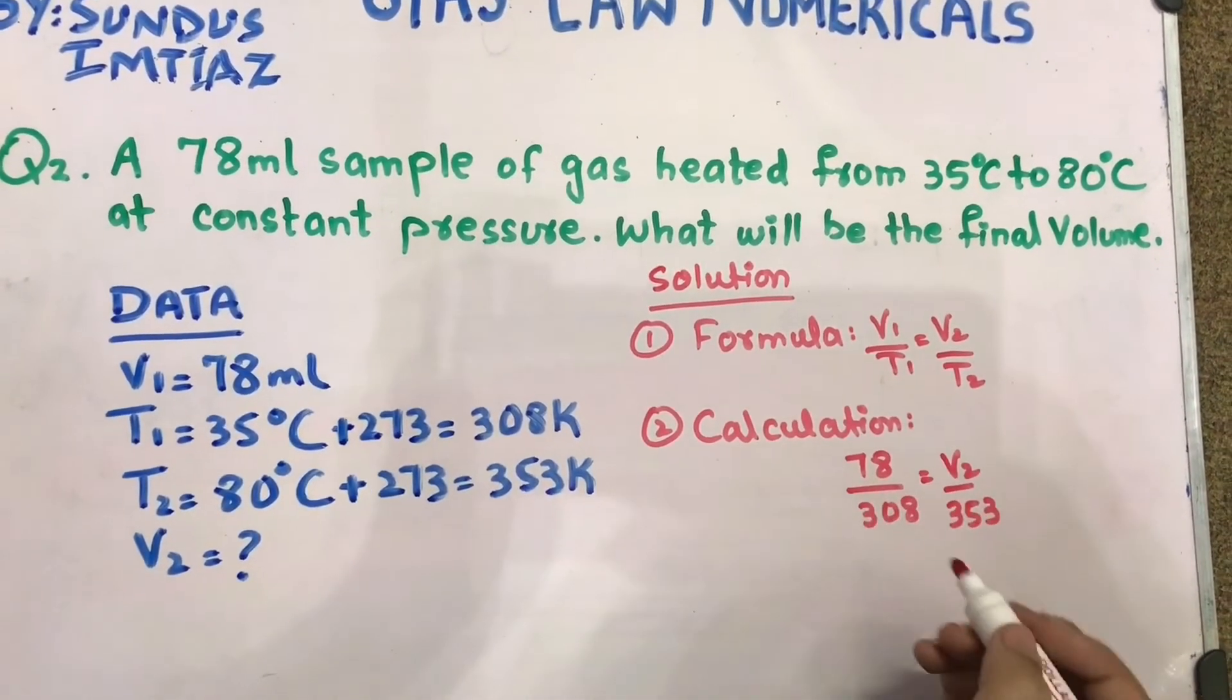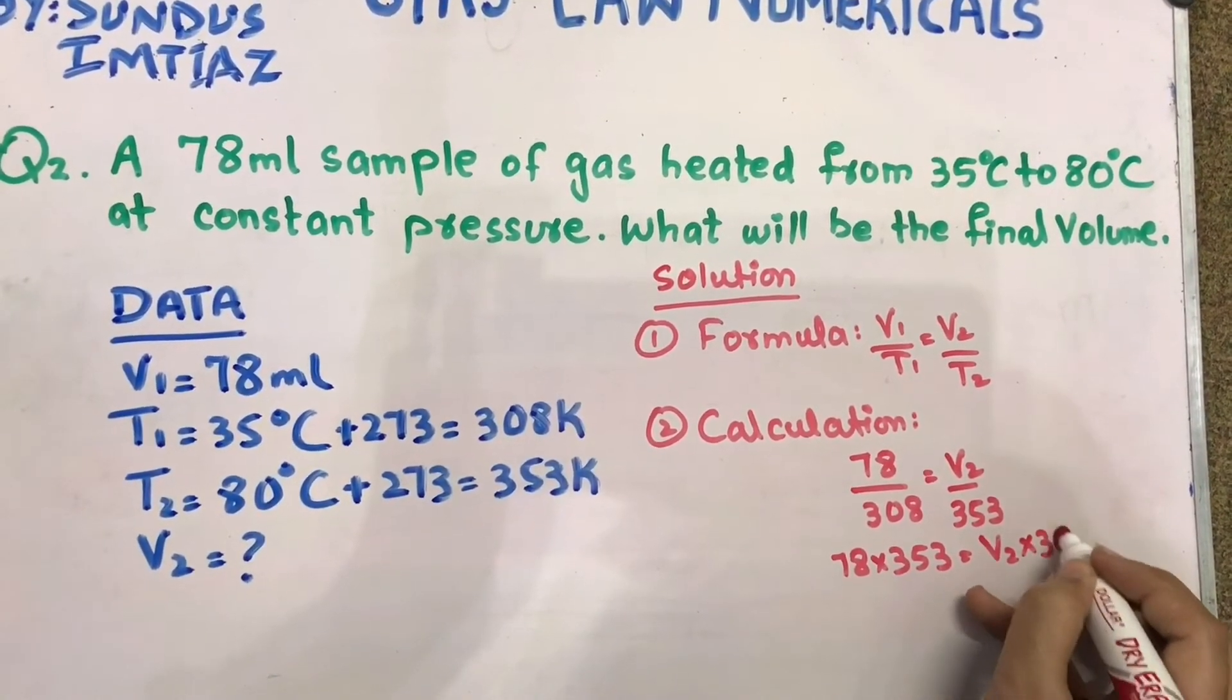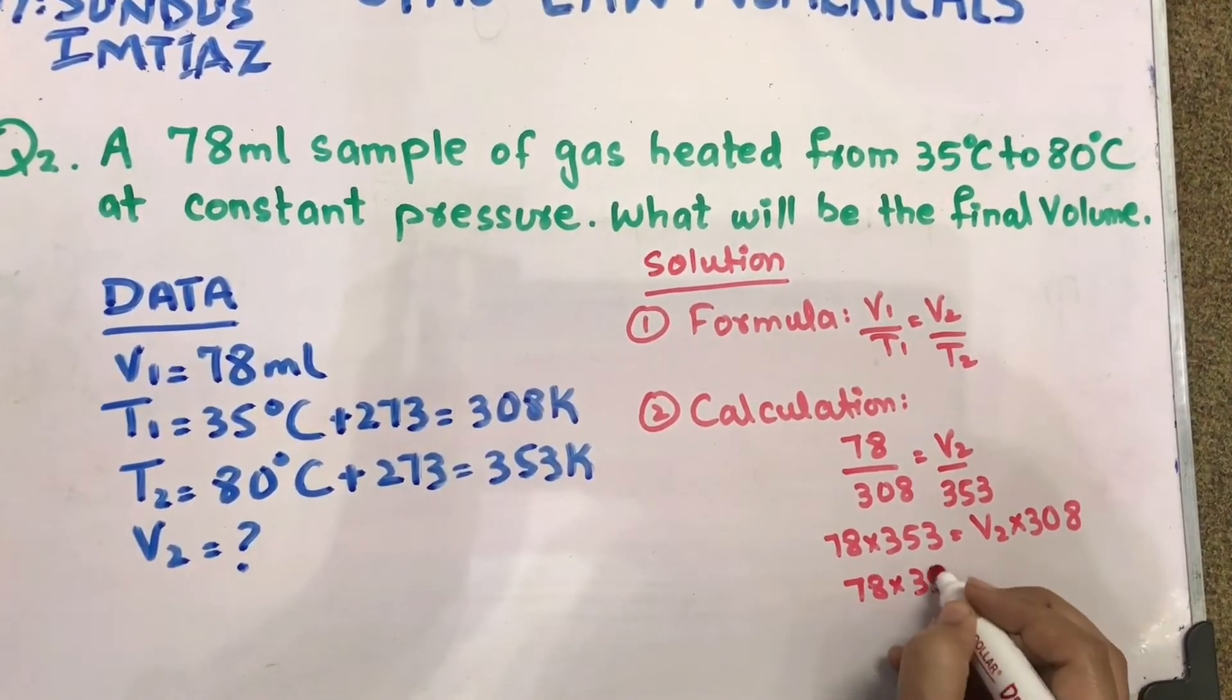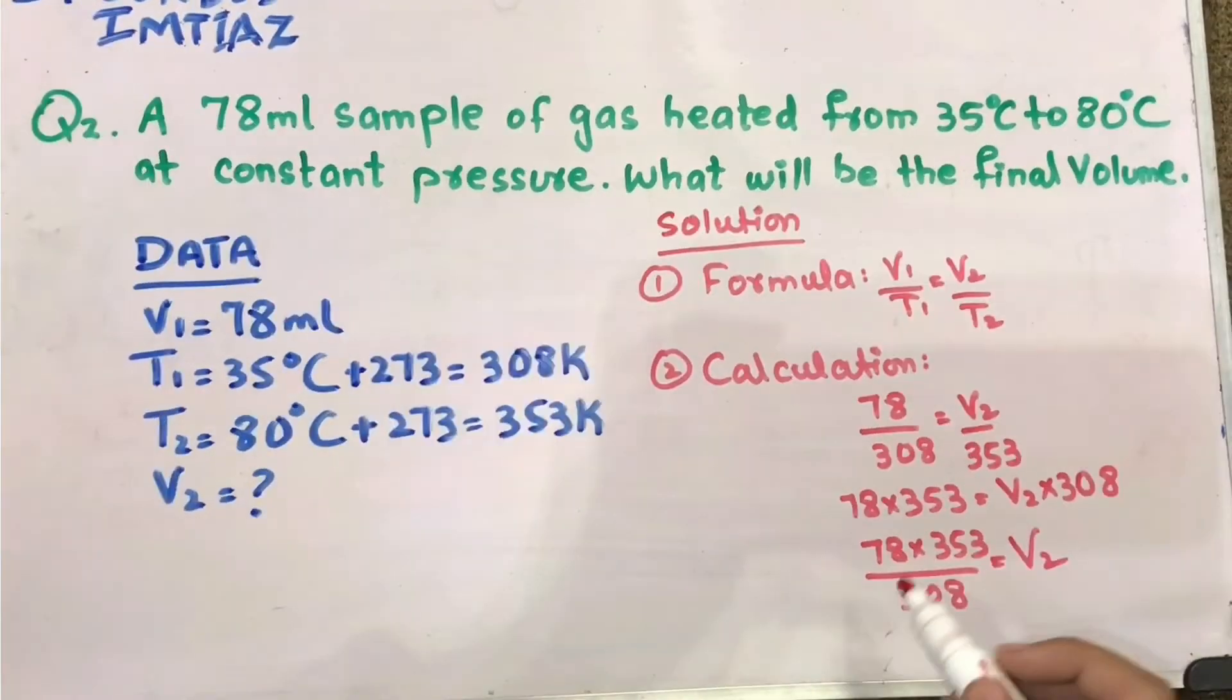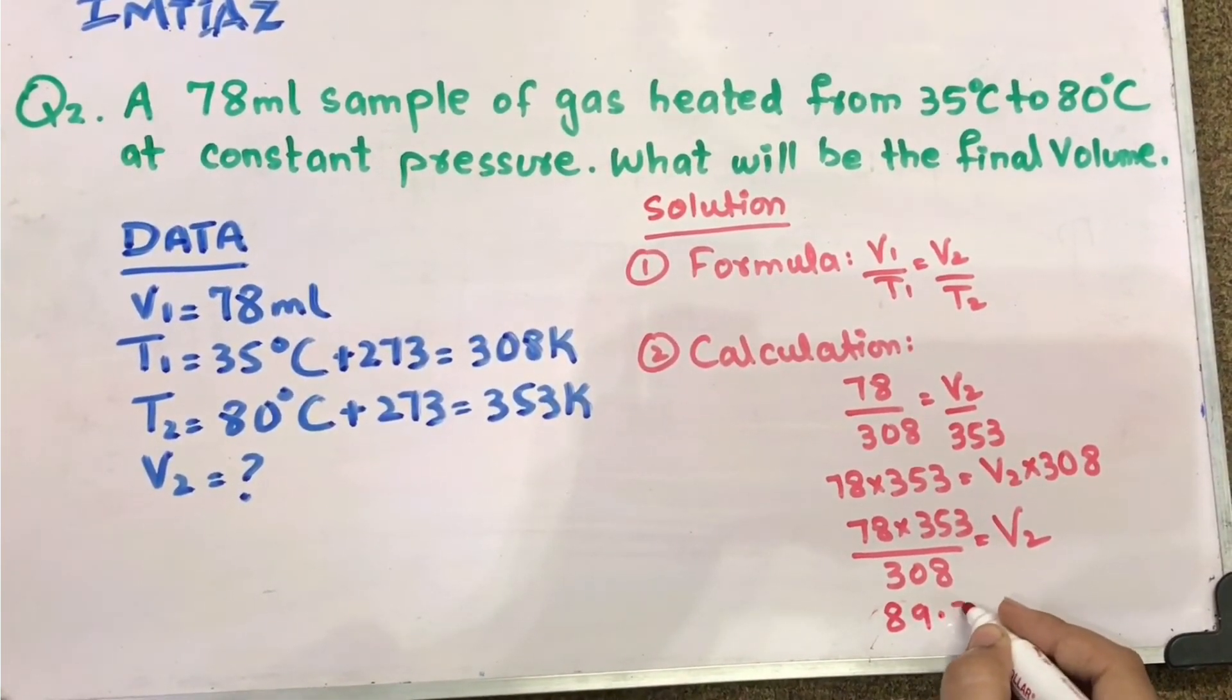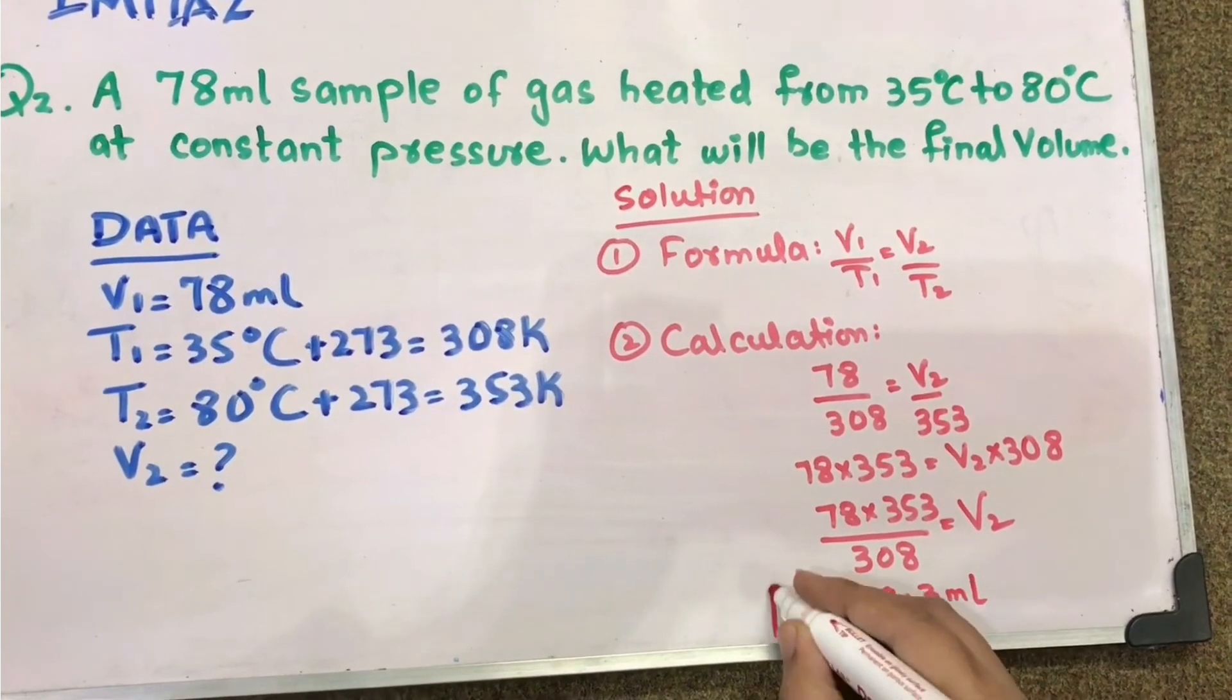You need to cross multiply these. It will be 78 multiply 353 equals V2 multiply 308. According to simple mathematics, 308 will go down. After 78 multiplied by 353, divide by 308. You will get 89.3. The unit, V1 is ml, so it should be ml. This is V2, the final volume.